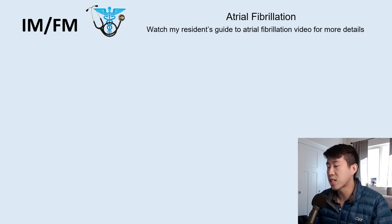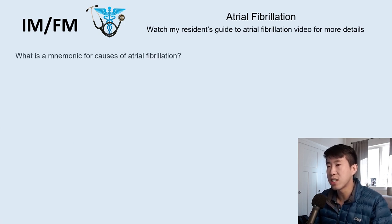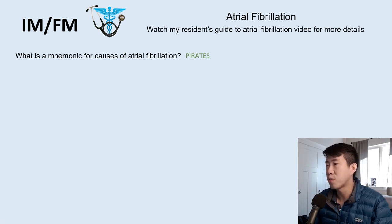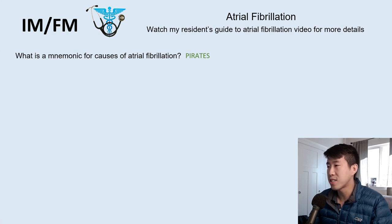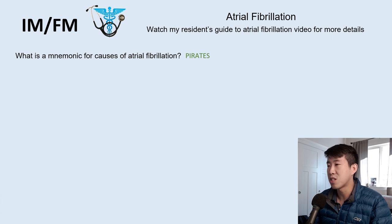The first condition is atrial fibrillation — the most common arrhythmia. I like to teach a mnemonic for causes of AFib called the pirate's mnemonic: P is for pulmonary or post-op; I is for ischemia, for example acute coronary syndrome; R is rheumatic heart disease; A is anemia; T is thyroid; E is electrolytes and ethanol; and S is for sepsis. These are some of the most common causes of atrial fibrillation.